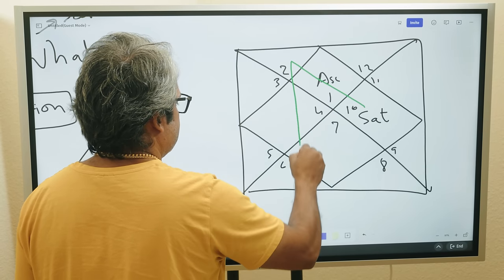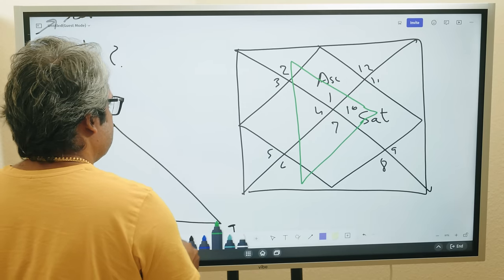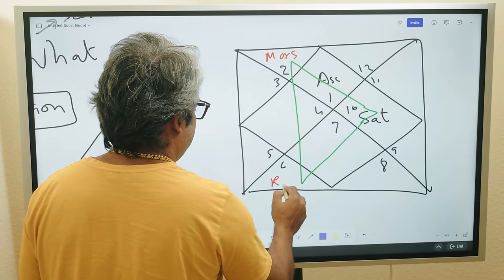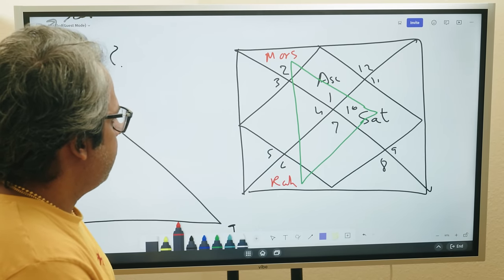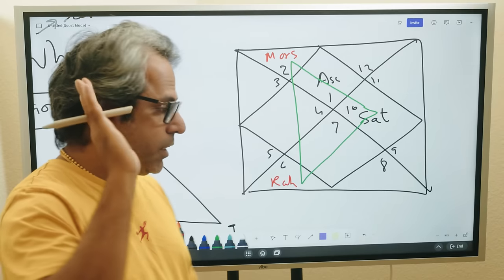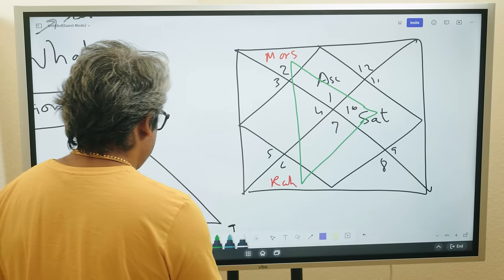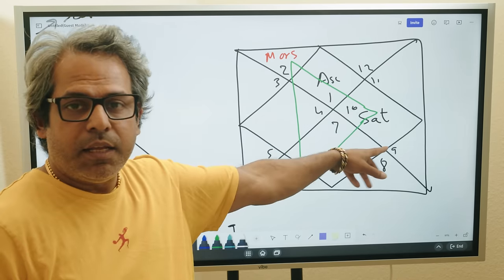There isn't. Second, I'm going to see if there's any planet trine from Saturn. There could be Mars here and there could be Rahu here.